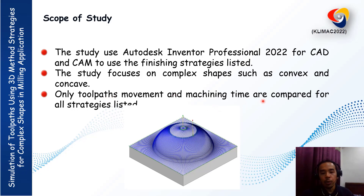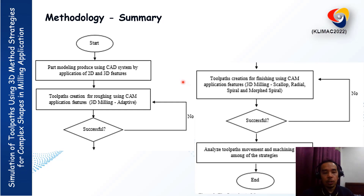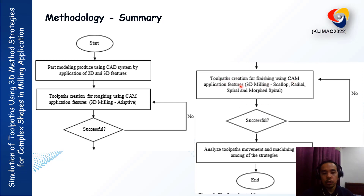Only toolpath movement and machining time are compared for all strategies listed. This is a summary of our methodology. We start by producing a 3D shape of a pad using the CAD system with 2D and 3D features. Then we proceed to toolpath creation for roughing using CAM features in Autodesk Inventor, using 3D milling adaptive strategy. If successful, we proceed to the finishing process to generate toolpath movement using Scallop, Radial, Spiral, and Mop Spiral strategies. Finally, we analyze toolpath movement and machining time among the strategies.